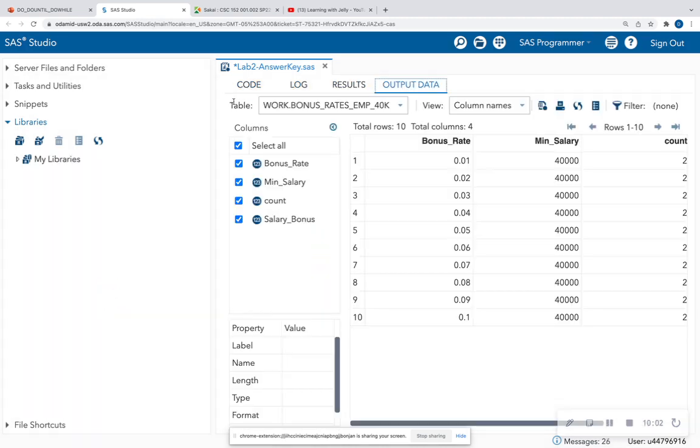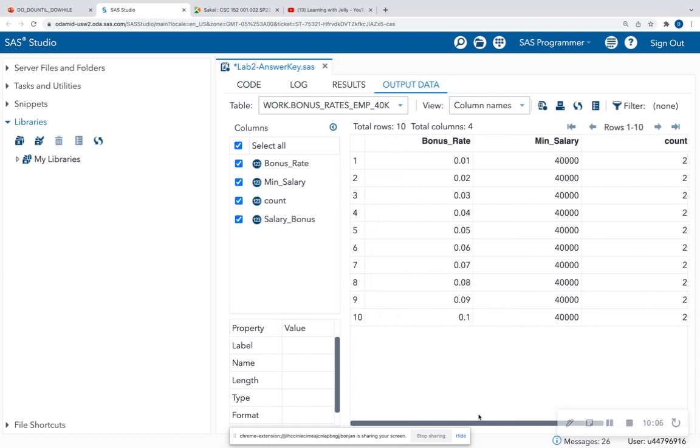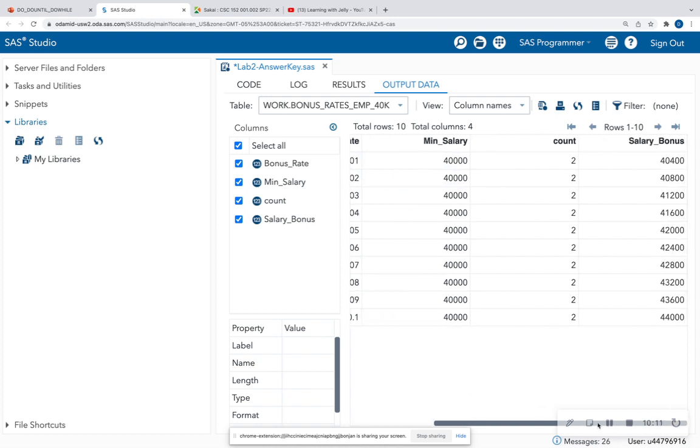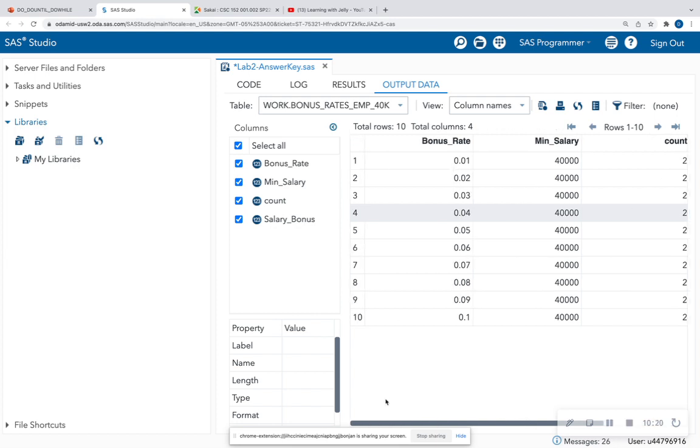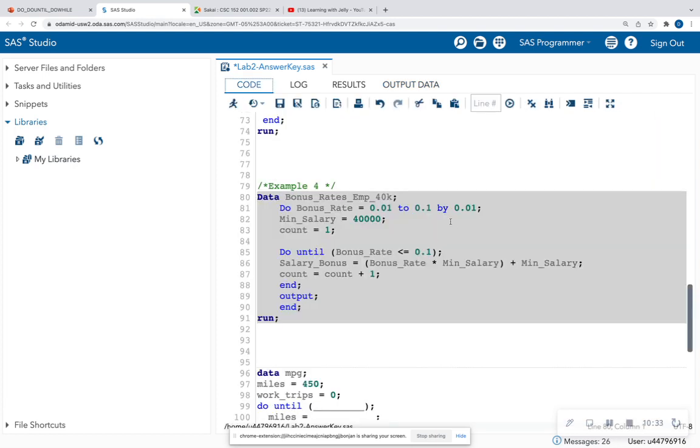And let's go ahead and see the output. Here we go. It ran quite fast this time because I already ran this before. So I see all of my bonus rates incrementing. And then I see my new salary for a $40,000 employee that has each rate. So a $40,000 employee that's getting a 9% bonus, I am going to give them $43,600, et cetera, et cetera, et cetera. So this gives us a nice list of our employees and their corresponding bonus.